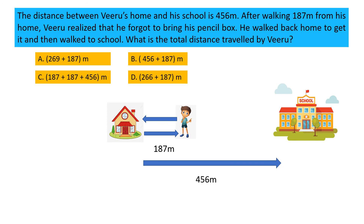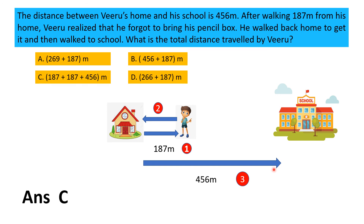He then traveled 456 meters again from his home to school. So the total distance traveled by Viru is 187 meters plus 187 meters plus 456 meters. The correct option is C: 187 + 187 + 456 meters.